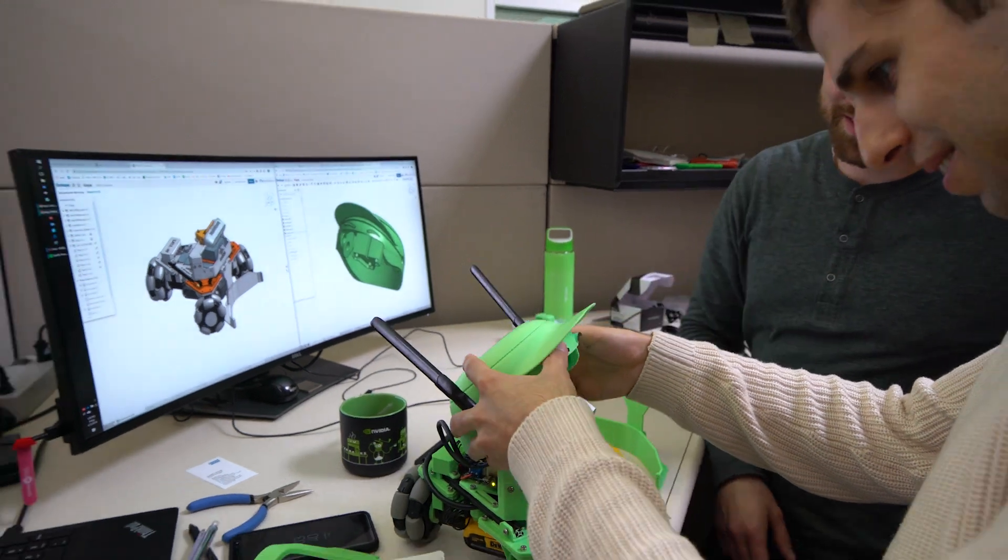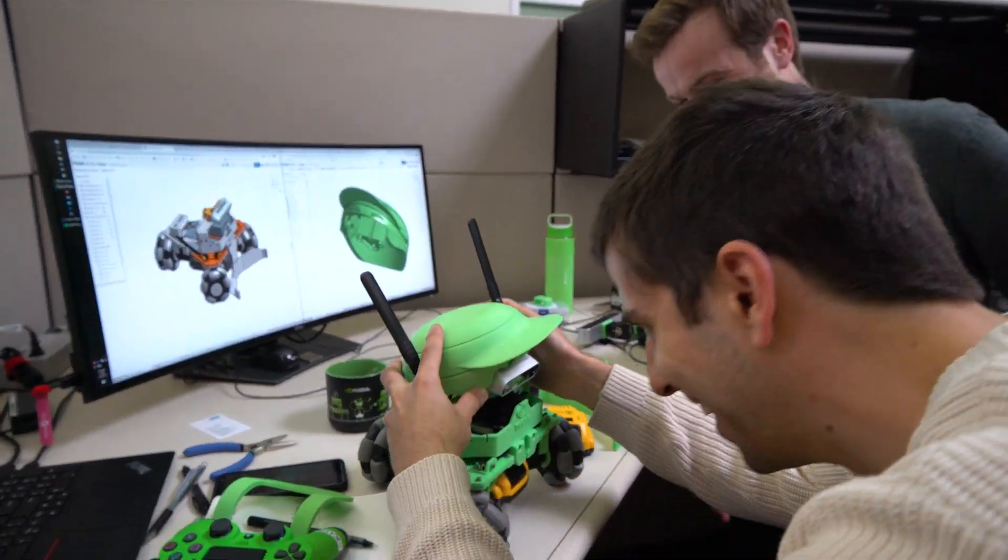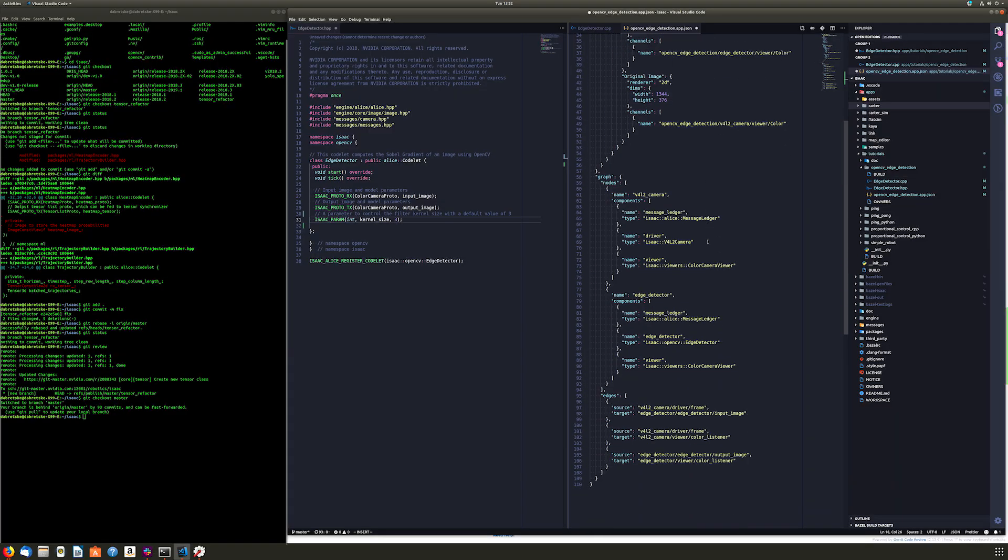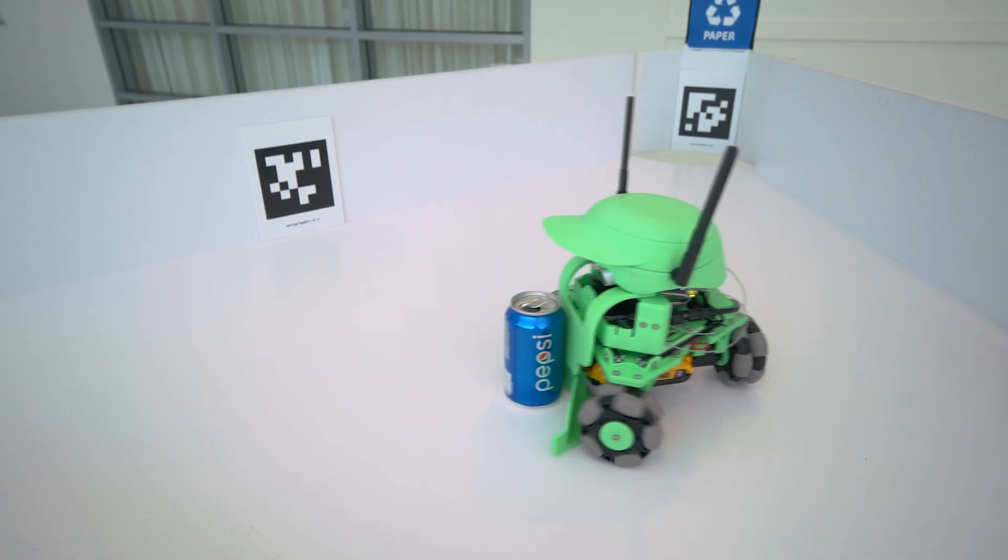ISIC is a software development toolkit which we built here in NVIDIA to build robotics applications. The ISIC SDK consists of three main blocks: the Robot Engine, ISIC Gems, and Reference Application.